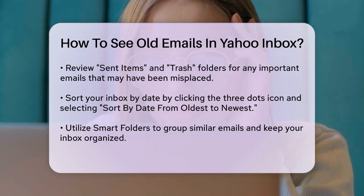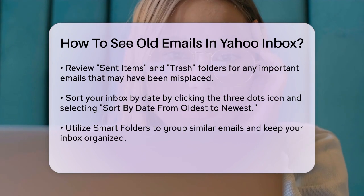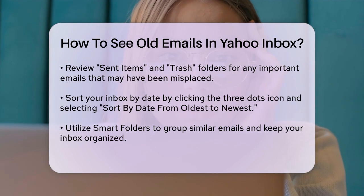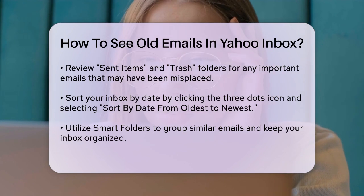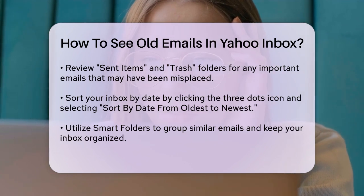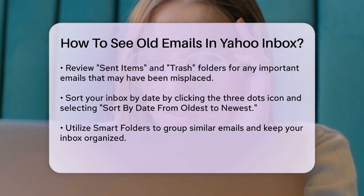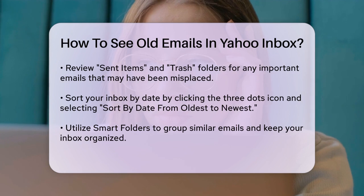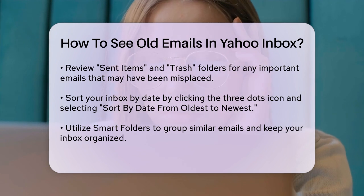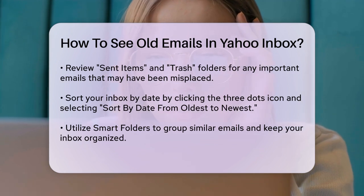To see all your emails in one place, you can sort your inbox by date. Click the three dots icon below your inbox header and select 'sort by date from oldest to newest.' This will arrange your emails in chronological order, making it easier to find older messages.